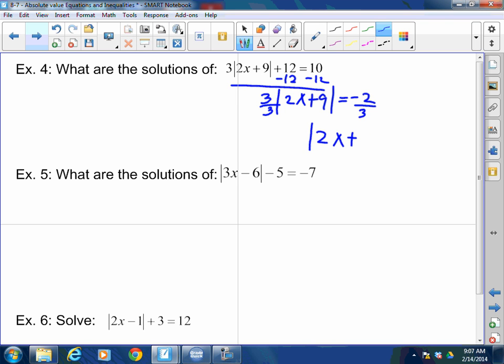Wait a second. Can the absolute value, when it's all by itself, can it equal a negative 2 thirds? When that happens, stop. No solution. You feel me? Yeah, when an absolute value equals a negative, it's no solution.